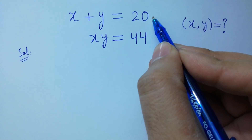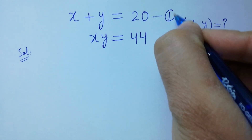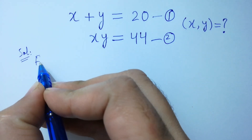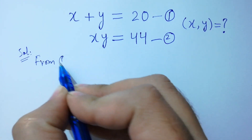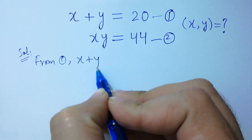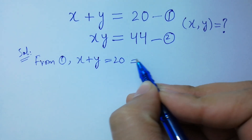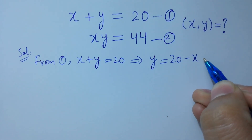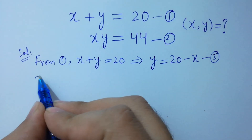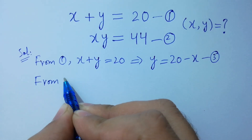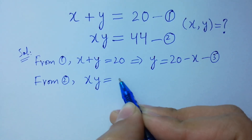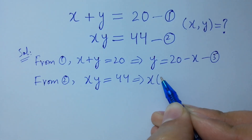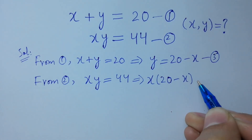Suppose x plus y equal to 20 is the first equation, and x times y equal to 44 is the second equation. From the first equation, x plus y equal to 20, then y equal to 20 minus x. Suppose this is the third equation. From the second equation, x times y equal to 44, put the value of y: x times (20 minus x) equal to 44.